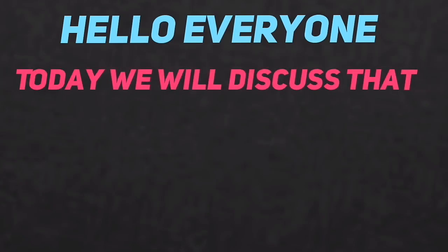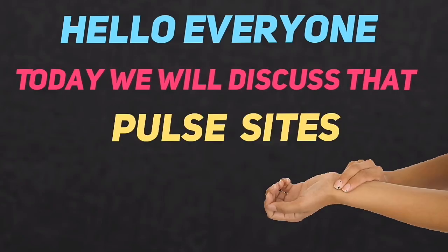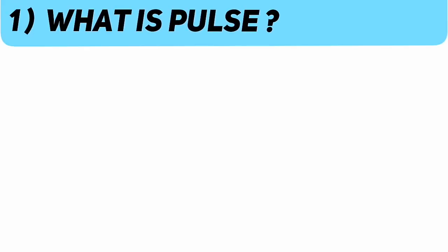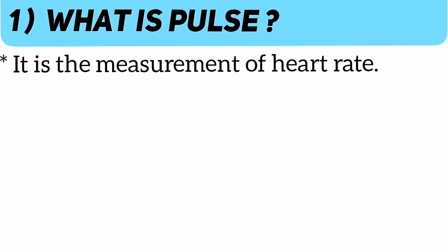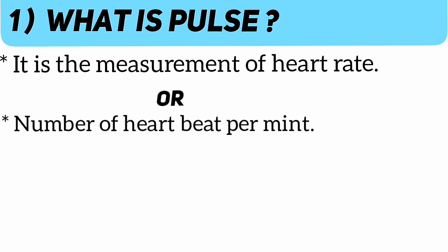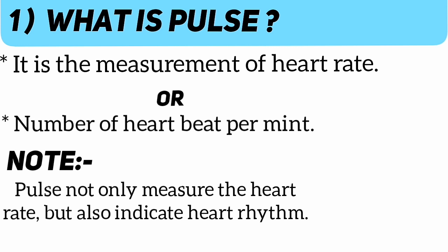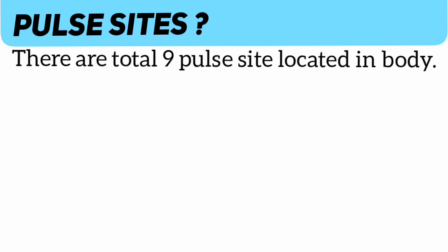Hello everyone, today we will discuss what is pulse and what are the pulse sites located in different regions of the body. Pulse is the measurement of heart rate, or number of heartbeats per minute. Pulse not only measures the heart rate but also indicates heart rhythm.